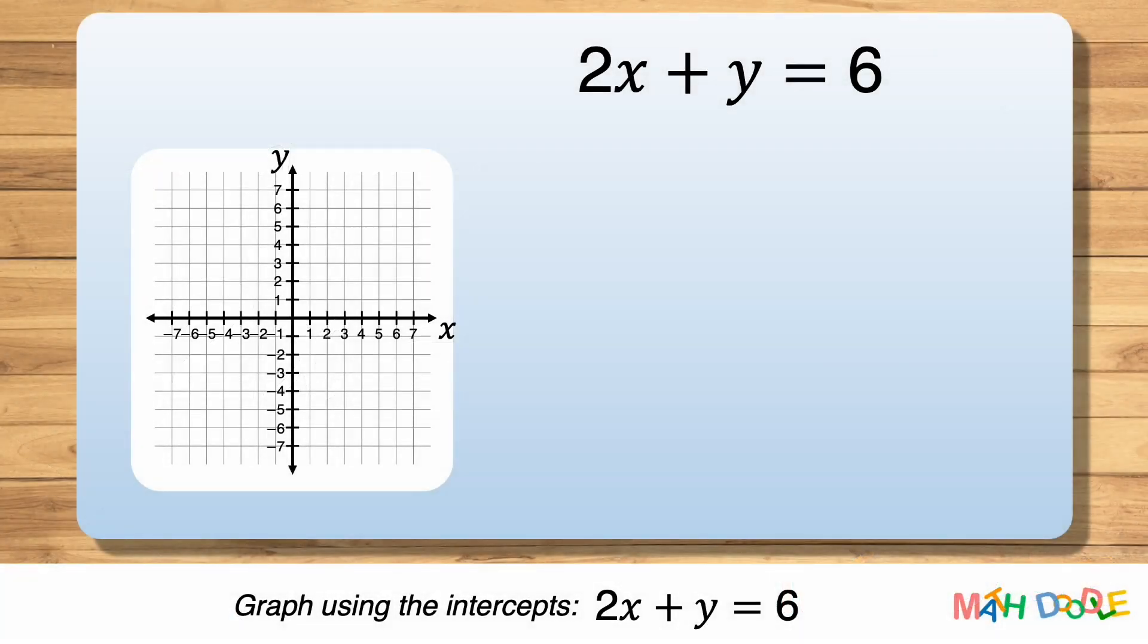To graph the equation 2x plus y equals 6, we are going to use the x and y-intercepts of the line.